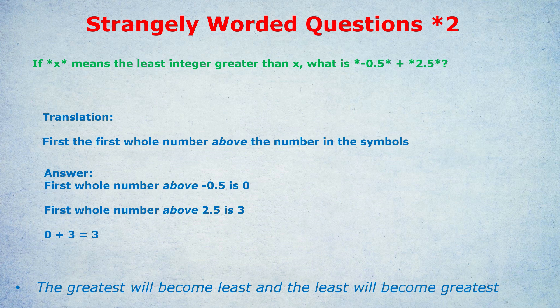Of course, 1, 2, 3, 4, 5, etc. is also greater than negative 0.5. But 0 is the first whole number that's greater. And for the second one, the first whole number that's greater than or above 2.5 is 3.